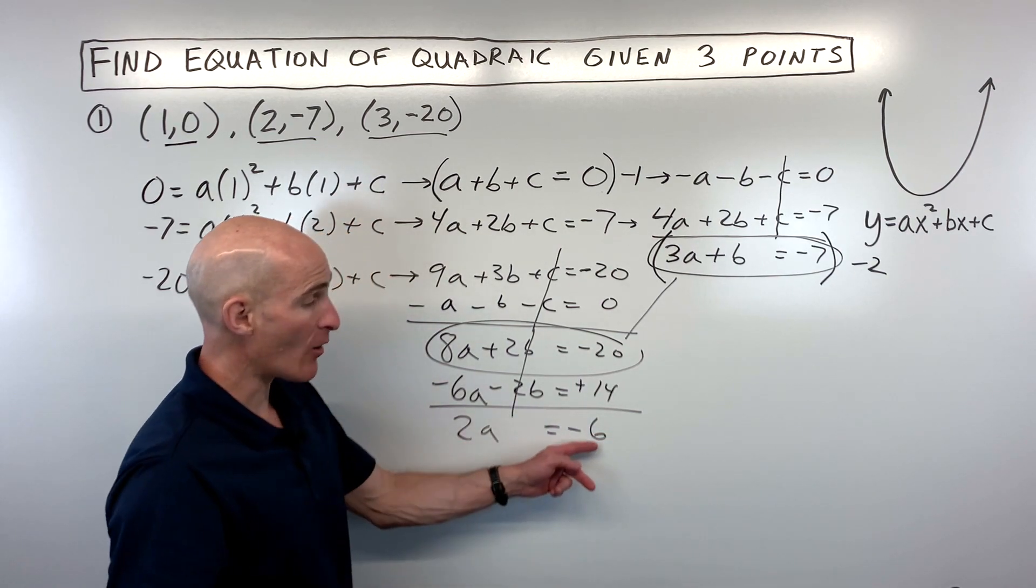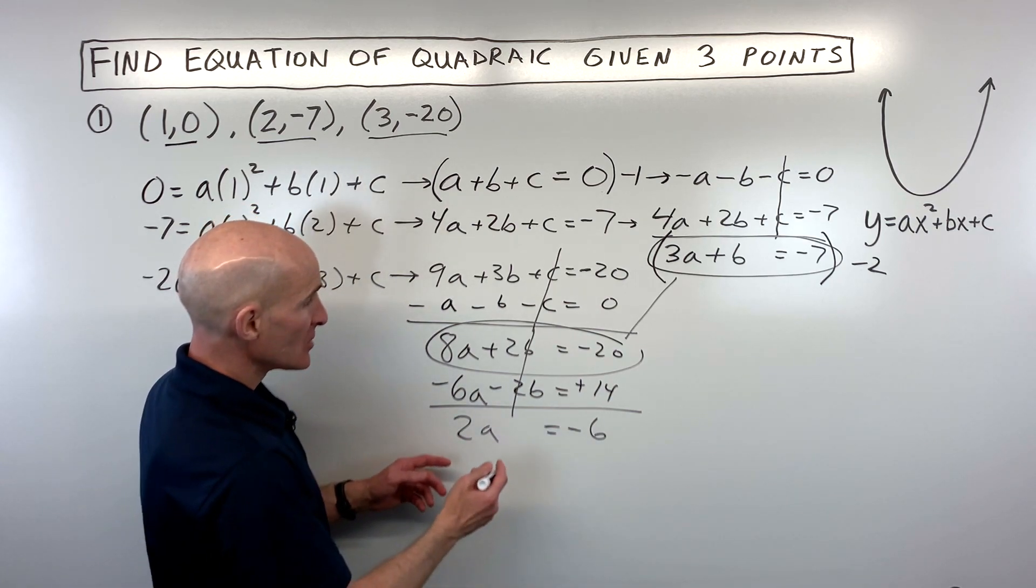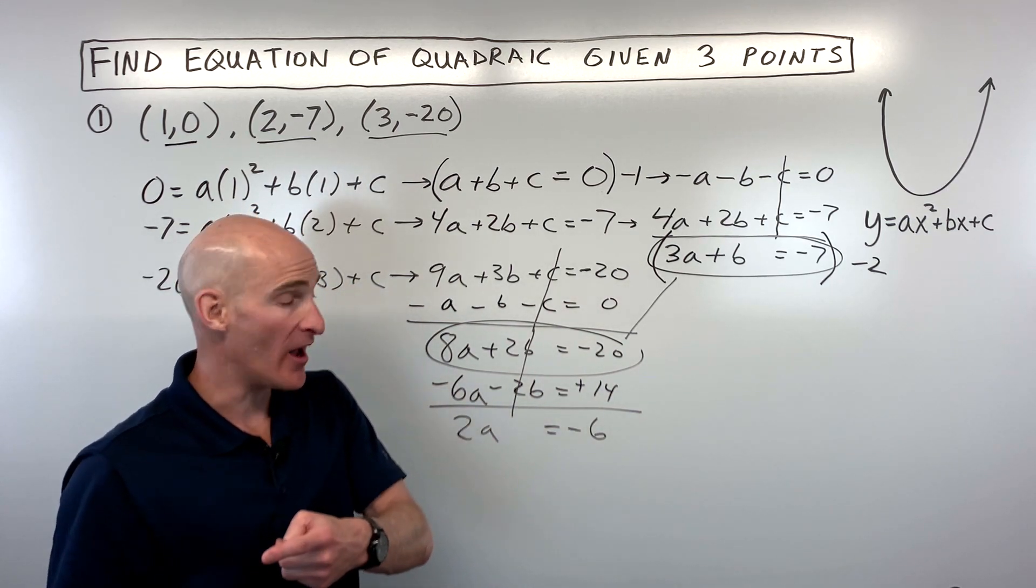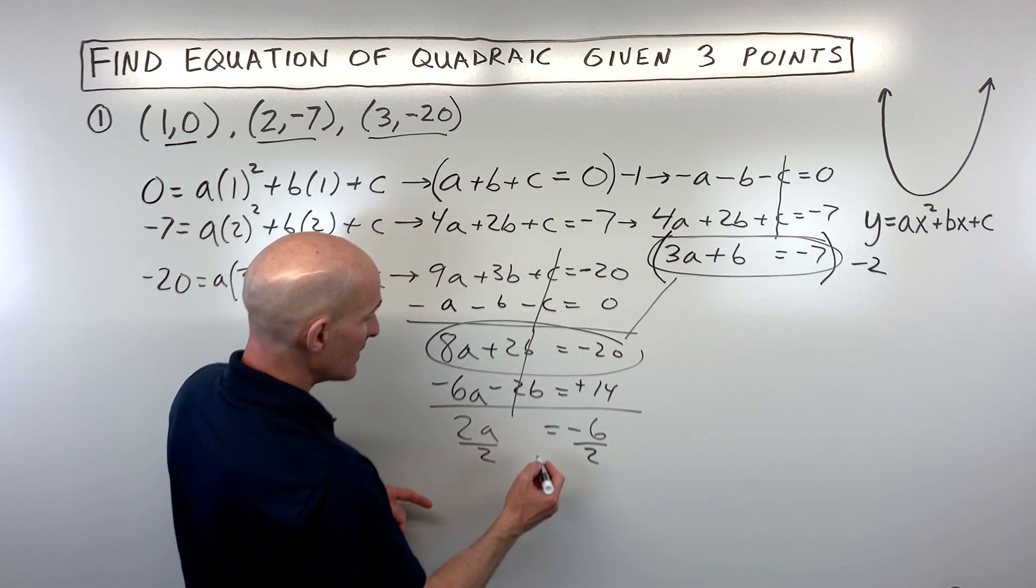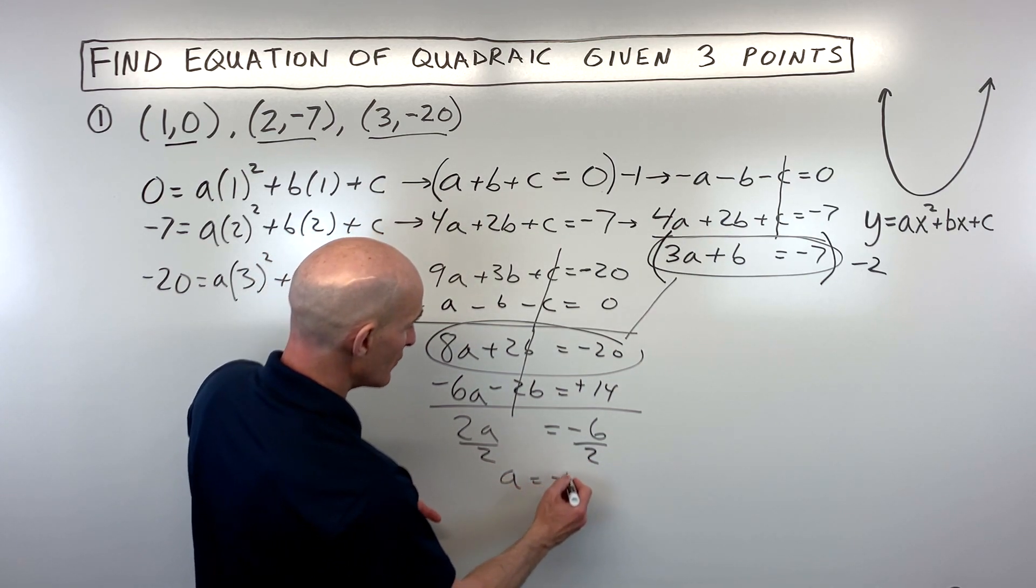And you can see now we're down to just one variable, one equation. So you can see how we went from 3 to 2 to 1. Now if we divide both sides by 2, you can see that a is coming out to negative 3.